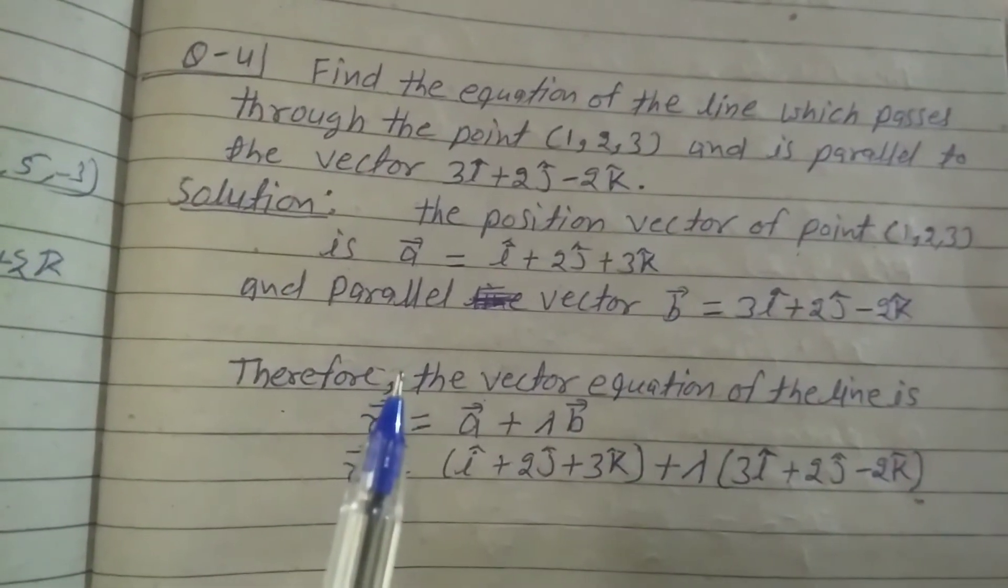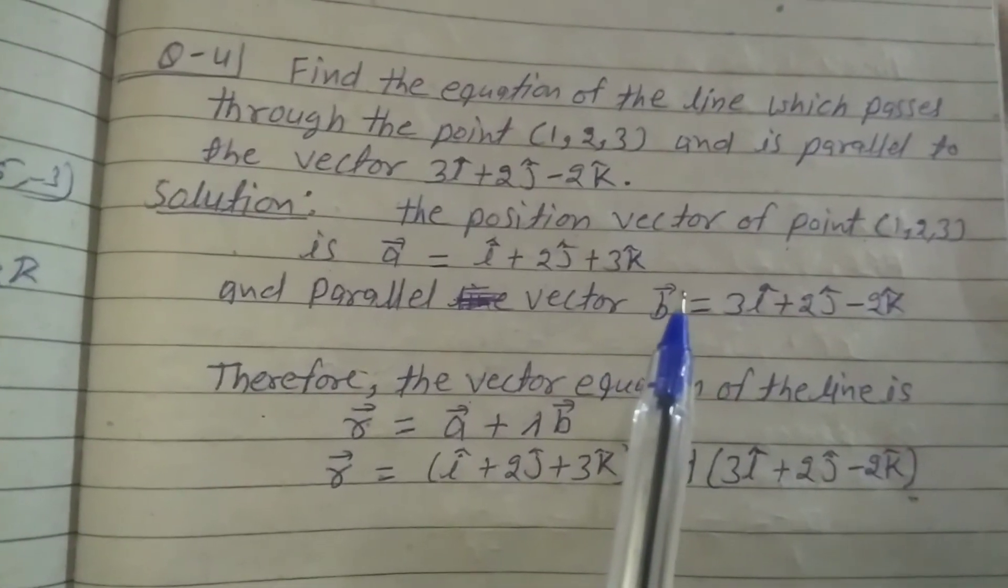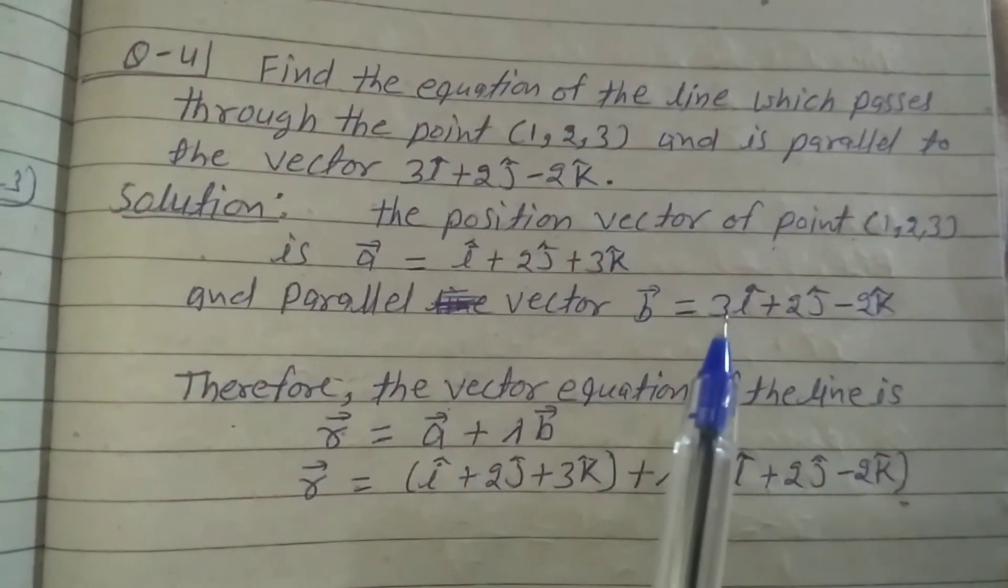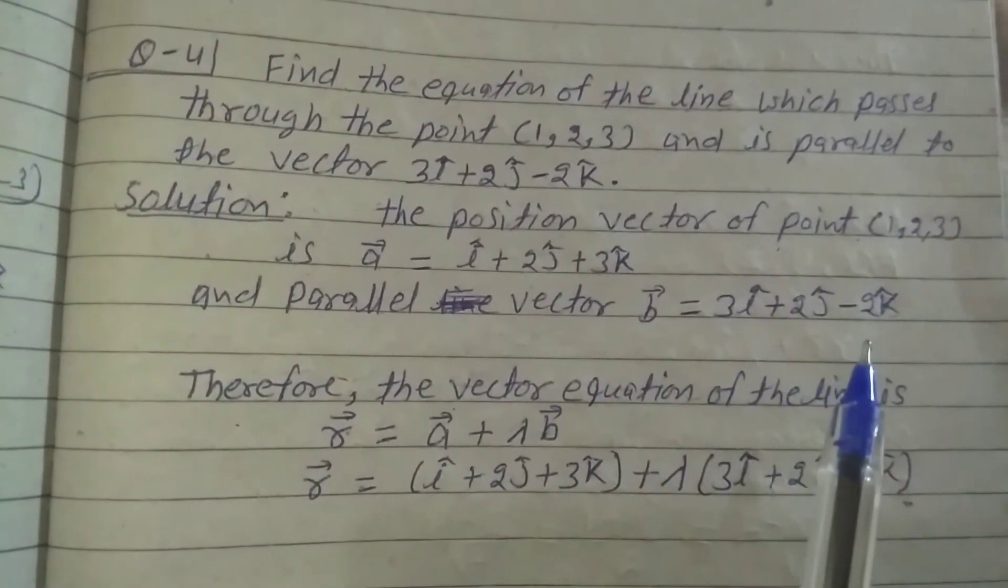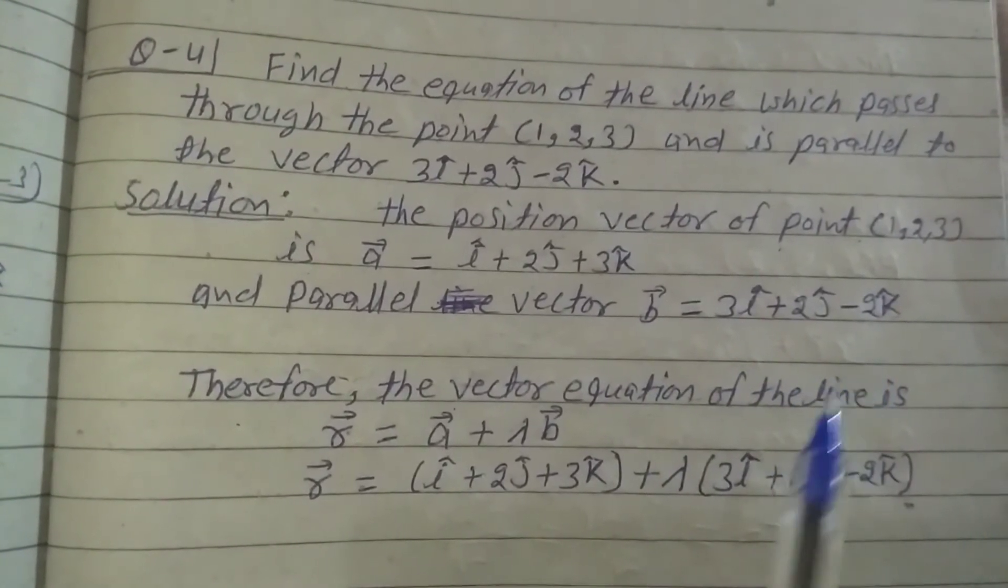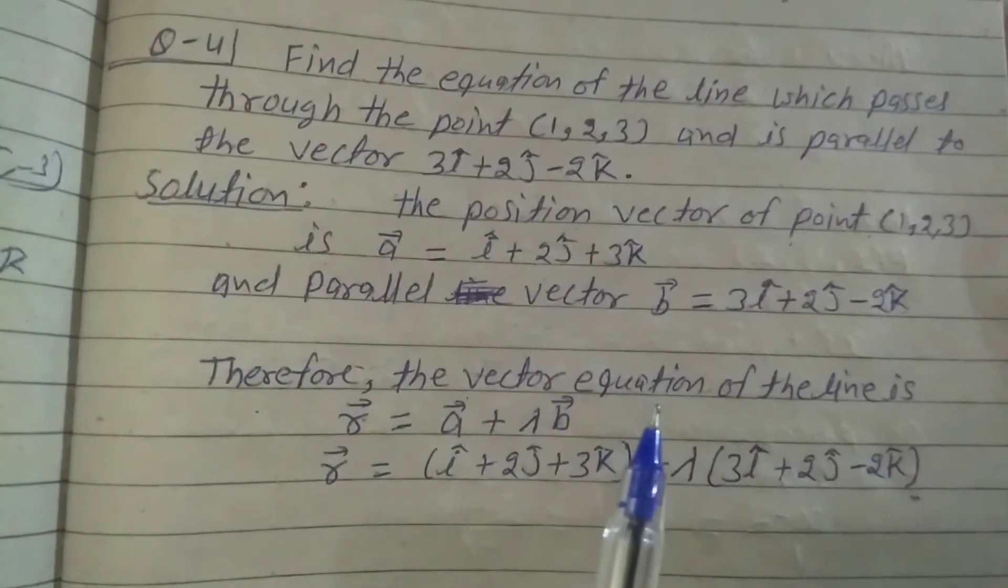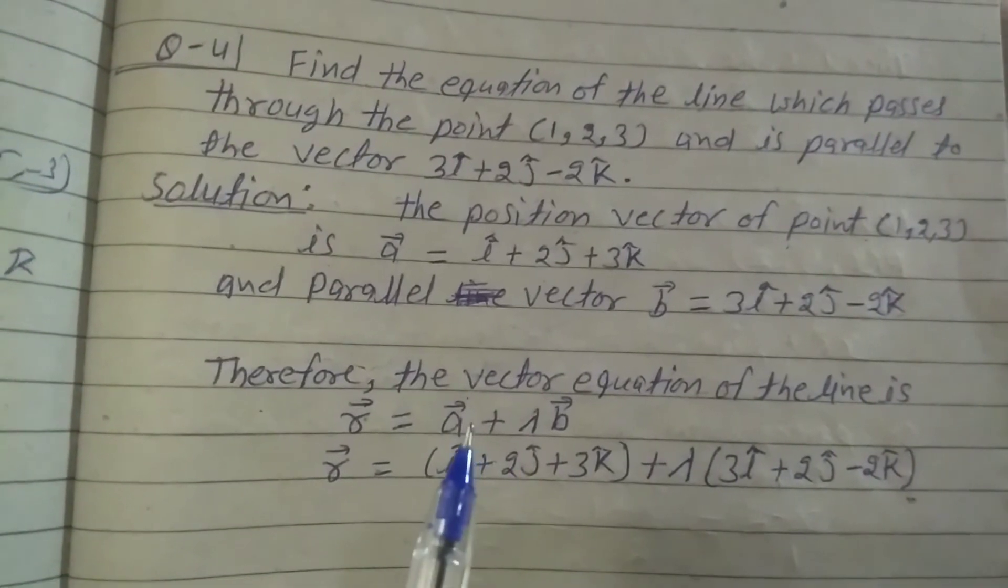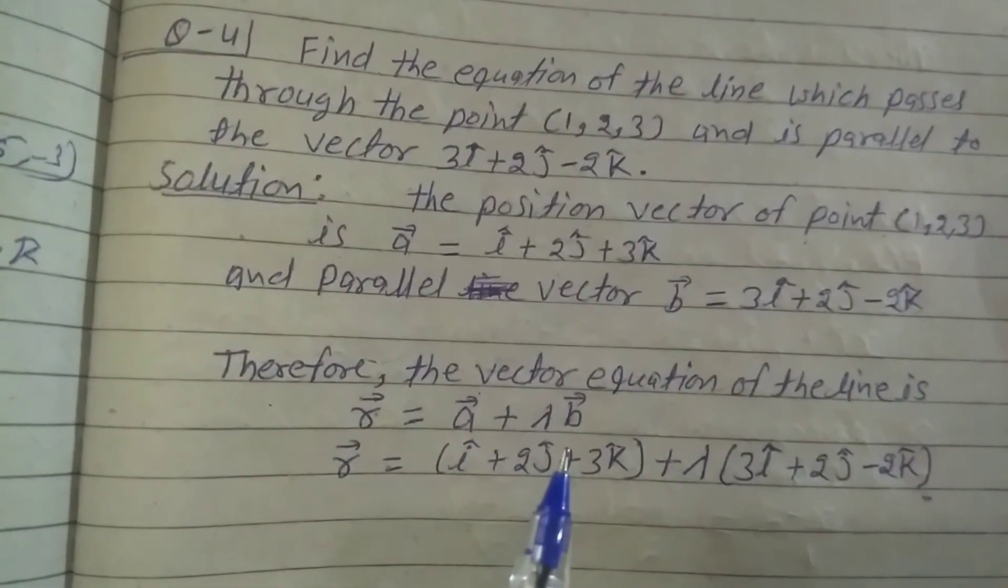The parallel vector b equals 3i cap plus 2j cap minus 2k cap. Therefore, the vector equation of the line is r vector equals a vector plus lambda b vector.